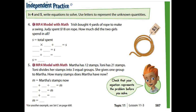The question is: Trish bought four yards of rope to make a swing; Judy spends eighteen dollars on the rope — how much did the two girls spend in all? S is equal to the total spend, and S is unknown. Trish bought four yards and each yard is three dollars, so the equation is four multiply three plus eighteen. Judy spent eighteen dollars on the rope.